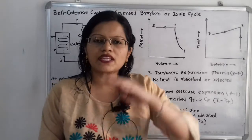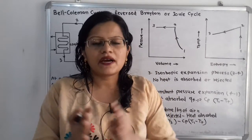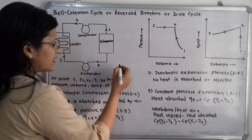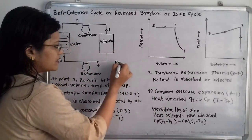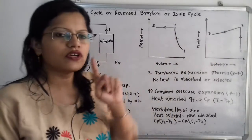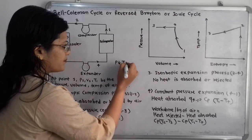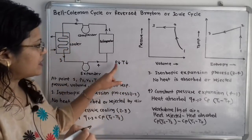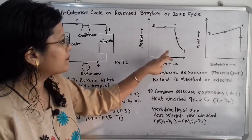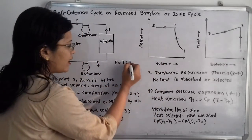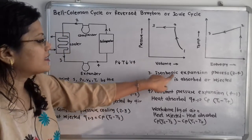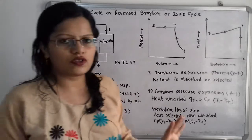Expansion means pressure decreases. As pressure decreases, temperature also decreases, and as pressure and temperature decrease, volume increases. Since this is an isentropic process, entropy remains constant, so we draw a straight vertical line on the TS diagram.